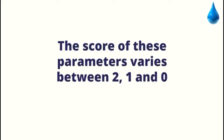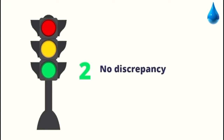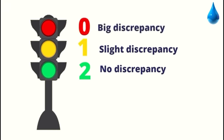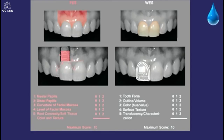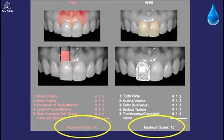The score of these parameters varies between two, one, and zero. Two is a very good score, indicating that the item evaluated well mimics its counterpart. One is for when there is a discrepancy. Zero is when this discrepancy is large. The maximum score is 10 points for pink aesthetic score and 10 points for white aesthetic score, totaling 20 points.